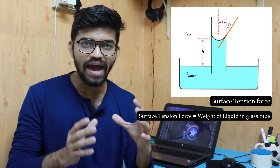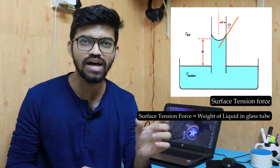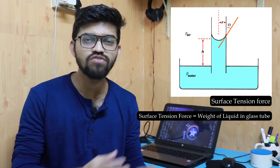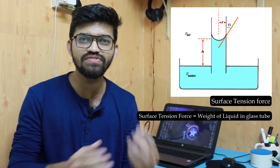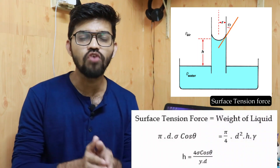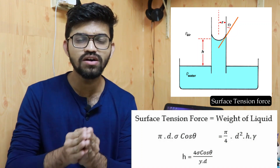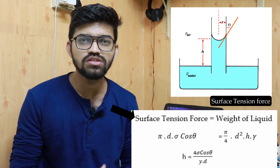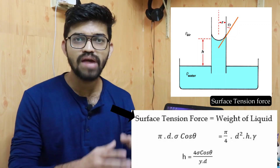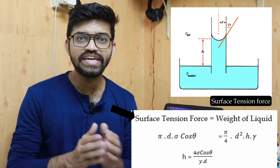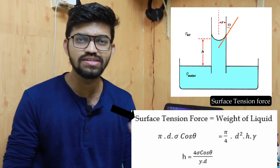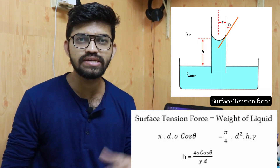At equilibrium, surface tension force equals the weight of the liquid. The weight of the liquid is calculated as specific weight gamma multiplied by volume, giving: (π/4) · d² · h · γ. The surface tension force is given by: π · d · σ · cosθ. Setting these equal and solving for h, we get the equation: h = 4σcosθ / (γd). This gives the capillary rise height h for a tube of diameter d.